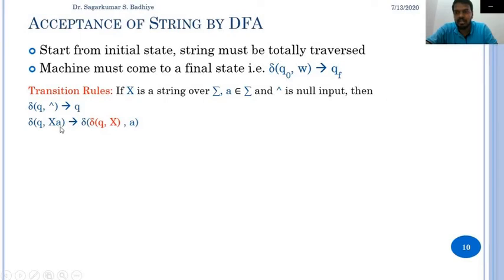The another rule is delta of q on xa derives to delta of delta of q comma x, comma a. This means that the automata transits from state q on input x and reaches a particular state, and from that state it again reads a and goes to some other state.